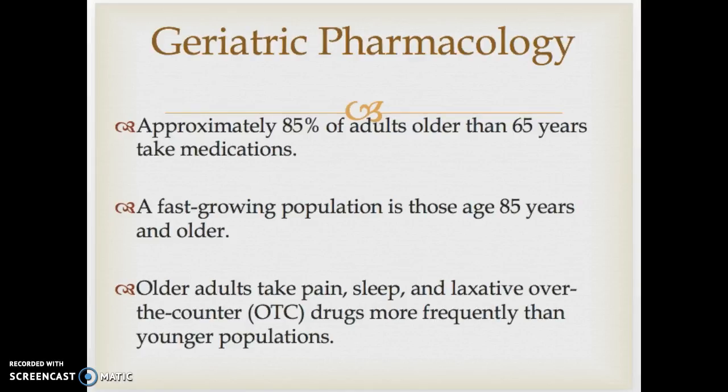A huge number of adults take medication — nearly 90% of adults 65 and older are on some sort of medication. People are also living longer because we're more efficient in our ability to treat diseases and conditions that previously people died from. So people are living longer, which means they're on more medications for longer, and we have more to look at and consider with the geriatric population.